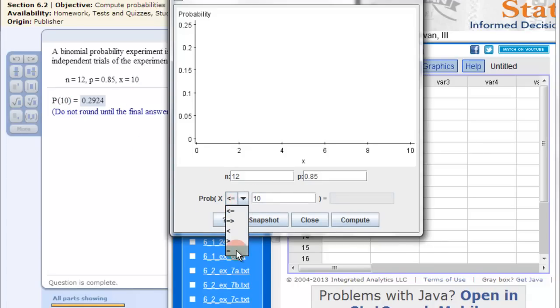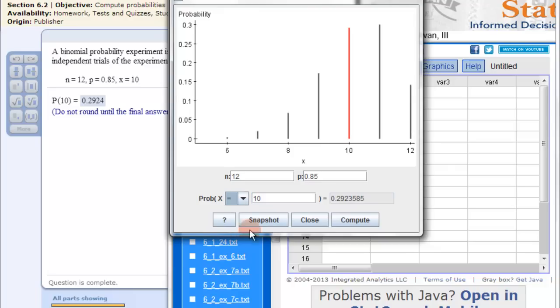So we click this button and go down here and click equal. Then it gives us our probability right there 0.2923 and 5 which rounds it up to a 4. So to get a probability of one event is quite quick.